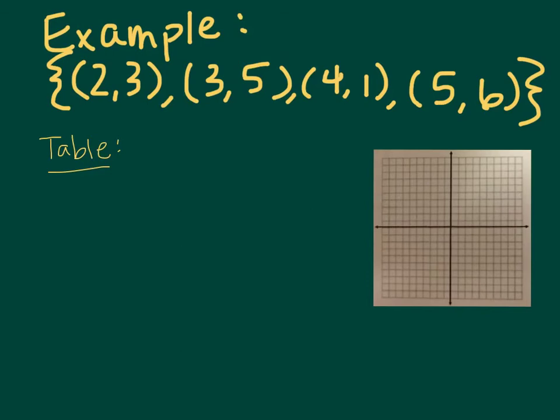One way that I can show that relation is just with these ordered pairs. That's one way to show our relation. But another way would be to put those ordered pairs in a table.